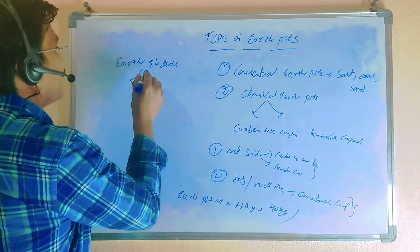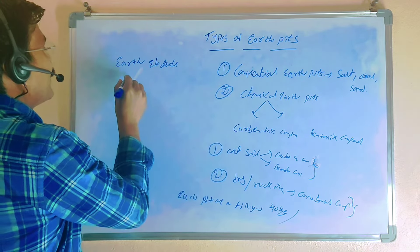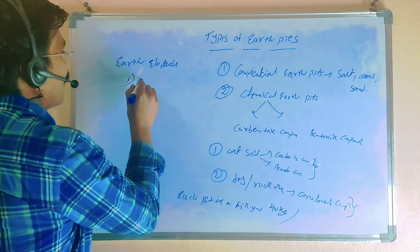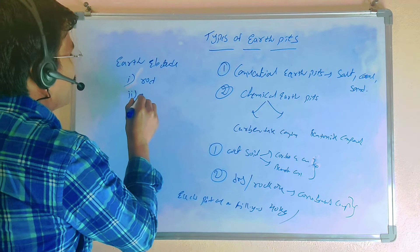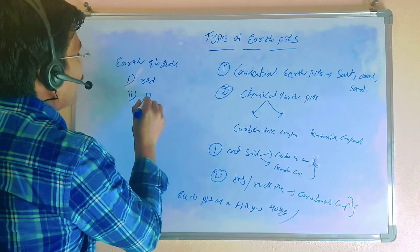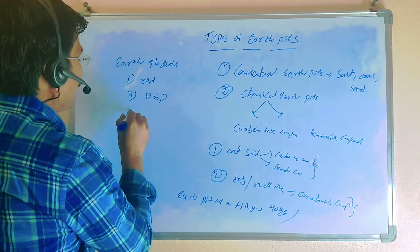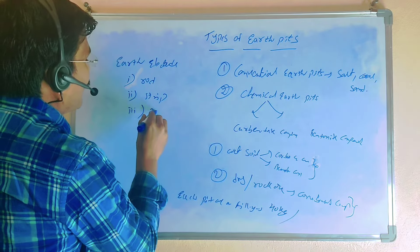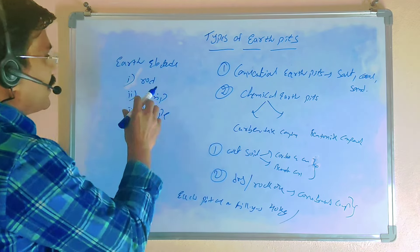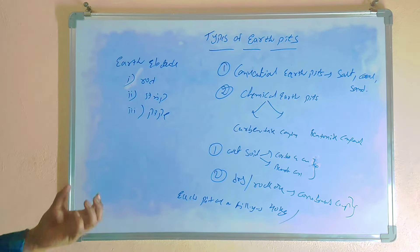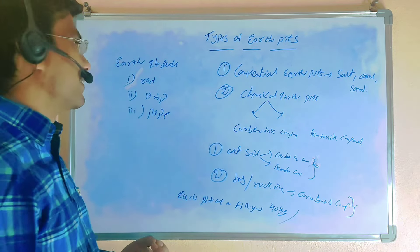Next, if you go for the electrodes, the electrodes may be classified into different types: round type, strip type, pipe type. Different types of earth electrodes are available.